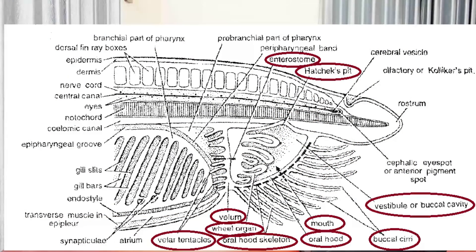Posteriorly, the vestibule is closed by a circular ring-like vertical membrane called the velum, and it is perforated by a central circular aperture called the endostome, leading into the pharynx. The endostome is sometimes mistakenly called the mouth, but it does not correspond to the mouth of other chordates because it opens into the pharynx lined with endoderm. The true mouth always opens into the stomodeum lined with ectoderm. The velum is provided with a sphincter to open or close the endostome, and the posterior border of the velum is produced into 10 or 12 slender ciliated sensory velum tentacles. They also serve to strain the water current entering the endostome.